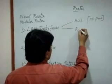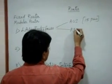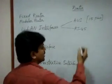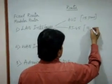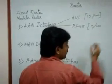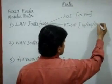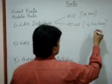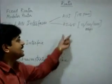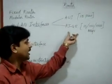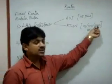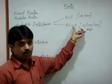Another LAN interface is the RJ45 port, which supports different bandwidths: 10 Mbps, 100 Mbps, and 1000 Mbps. The 10 Mbps port is called an Ethernet port, the 100 Mbps port is called a Fast Ethernet port, and the 1000 Mbps port is called a Gigabit Ethernet port. All of these are for LAN.